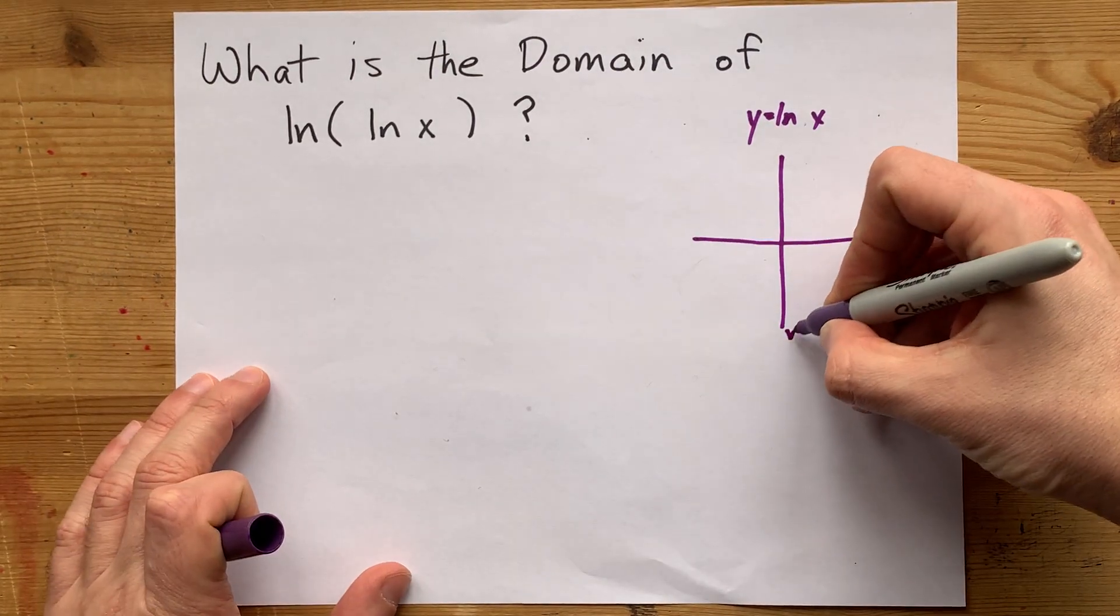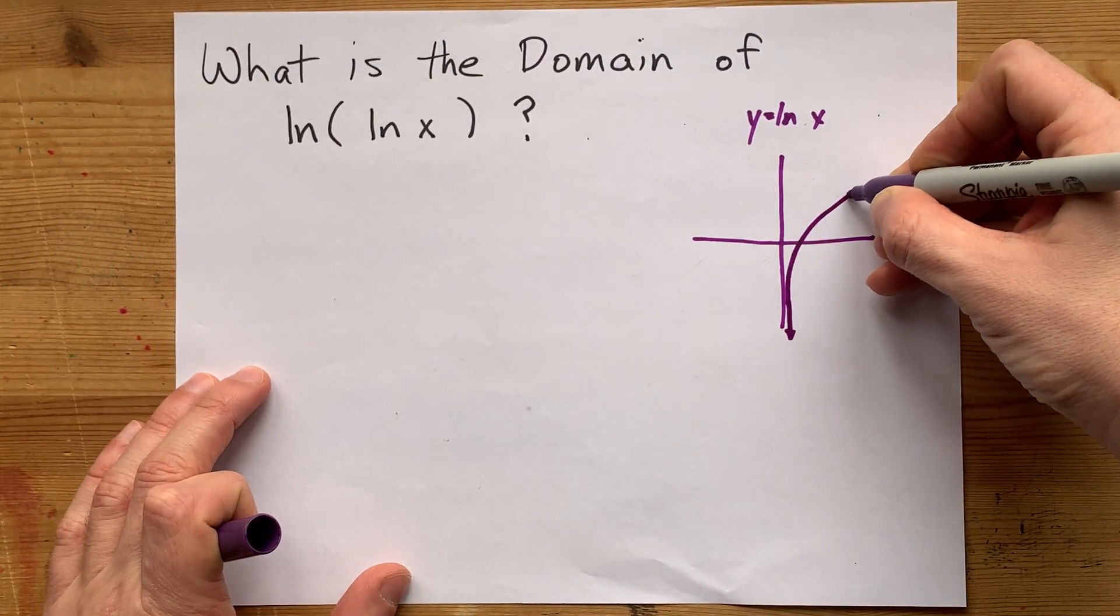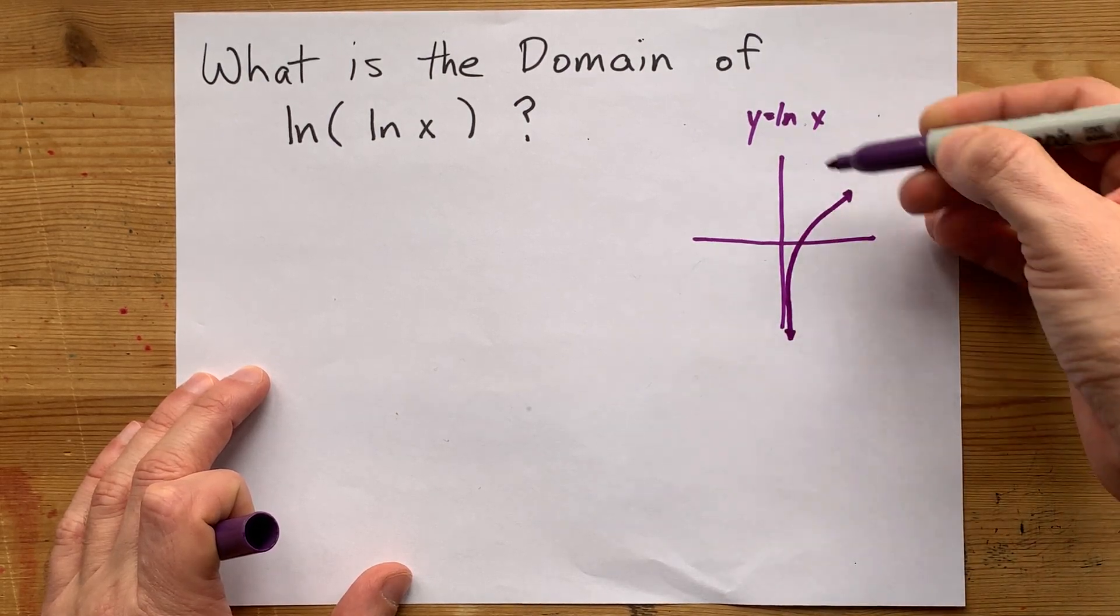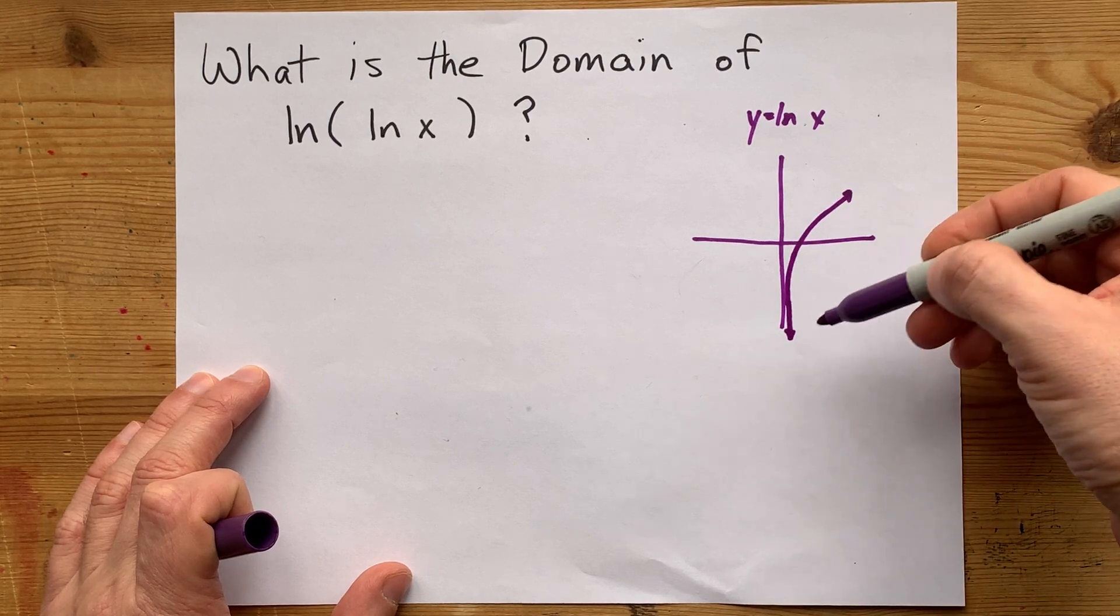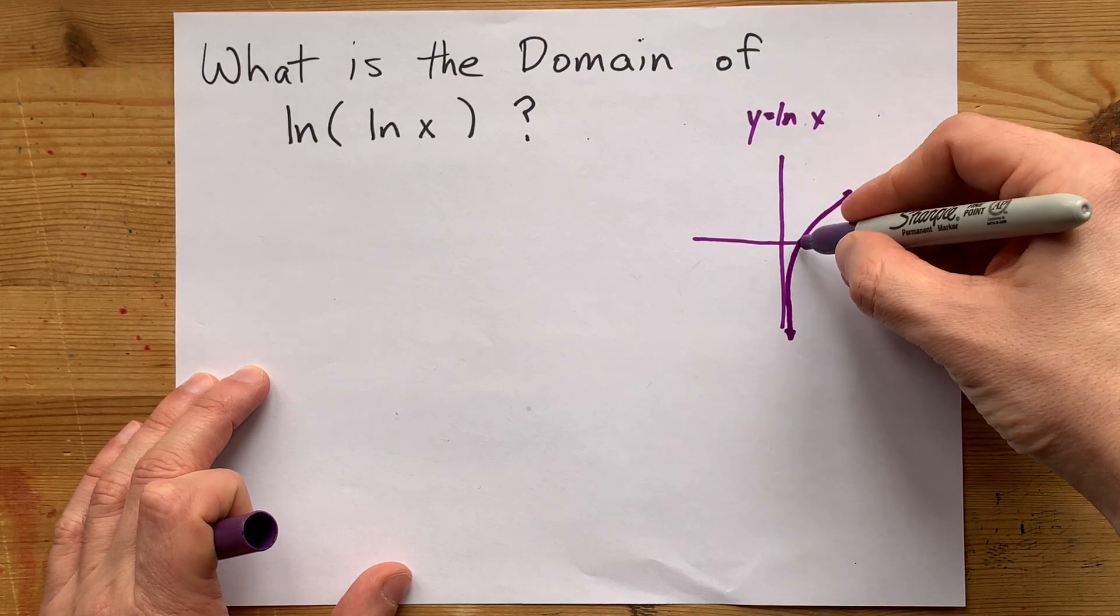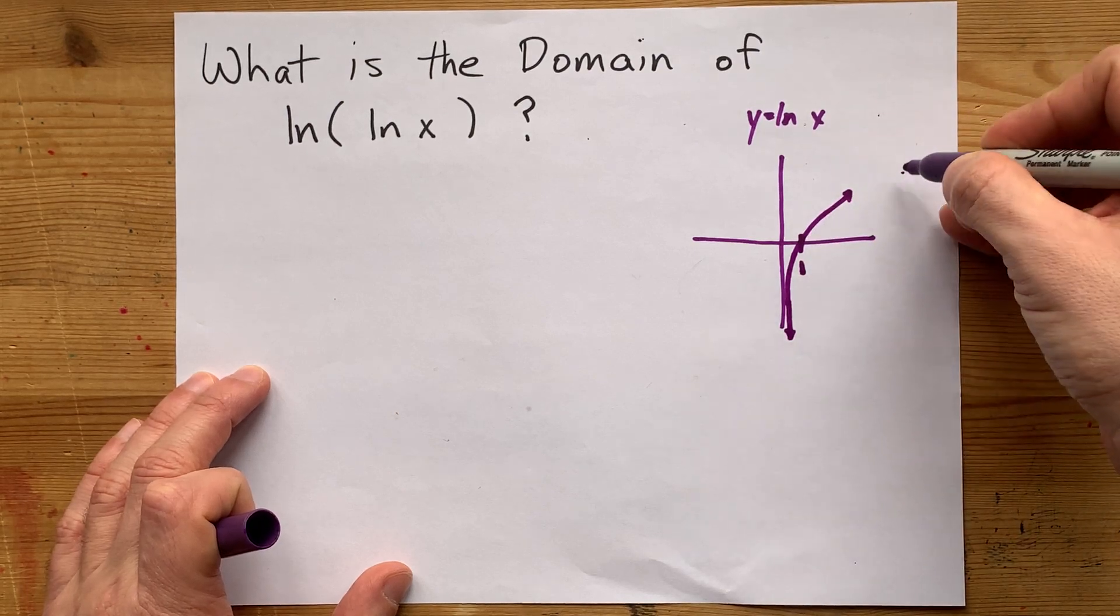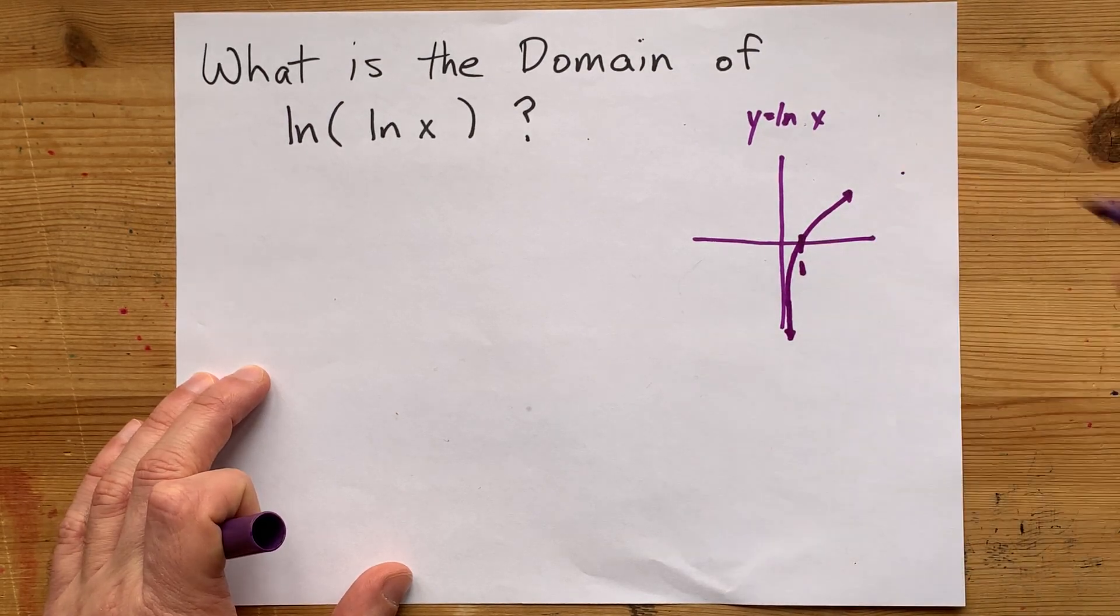The graph itself looks like this. There's a vertical asymptote at x equals 0. And you can take the ln of any positive number, and you'll end up getting either a negative number if the number you put in is less than 1, or a positive number if the number you put in is greater than 1.